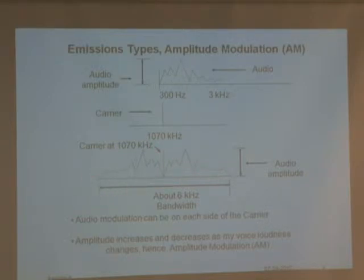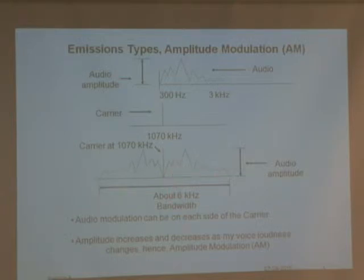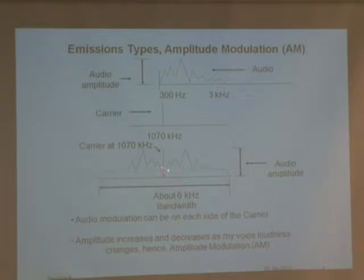As I talk, the amplitude of what I do changes the amplitude of the carrier. It's like a speaker — I talk into it and out comes sound. So audio modulation appears on each side of the carrier, and the amplitude increases and decreases as my voice increases and decreases. Hence, this is called amplitude modulation — AM. This is what AM radio is.